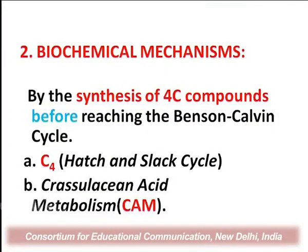We have two pathways: the C4 or Hatch and Slack cycle, popularly called the HSK cycle, and CAM metabolism, which is Crassulacean Acid Metabolism. Both are very interesting engineering feats of nature in minimizing the process of photorespiration. Before going into the details of both these cycles, it would be worthwhile to understand what is the path of carbon when it reaches the chloroplasts, as inorganic carbon has to cross four different barriers before entering the Calvin cycle.